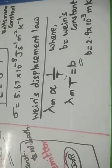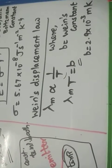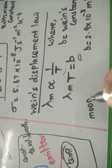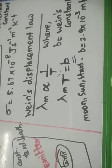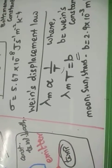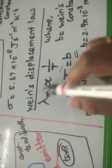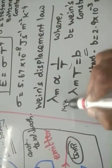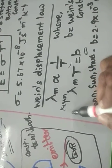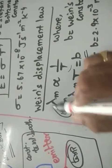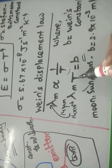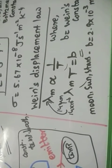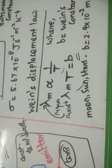Wien's displacement law can be used to estimate the surface temperature of the moon, sun, and stars. For example, the light from the moon shows maximum intensity at λ = 14 micrometers (14 × 10⁻⁶ m). By substituting this into Wien's law — T = b / λ_max — the surface temperature of the moon works out to around 200 Kelvin.